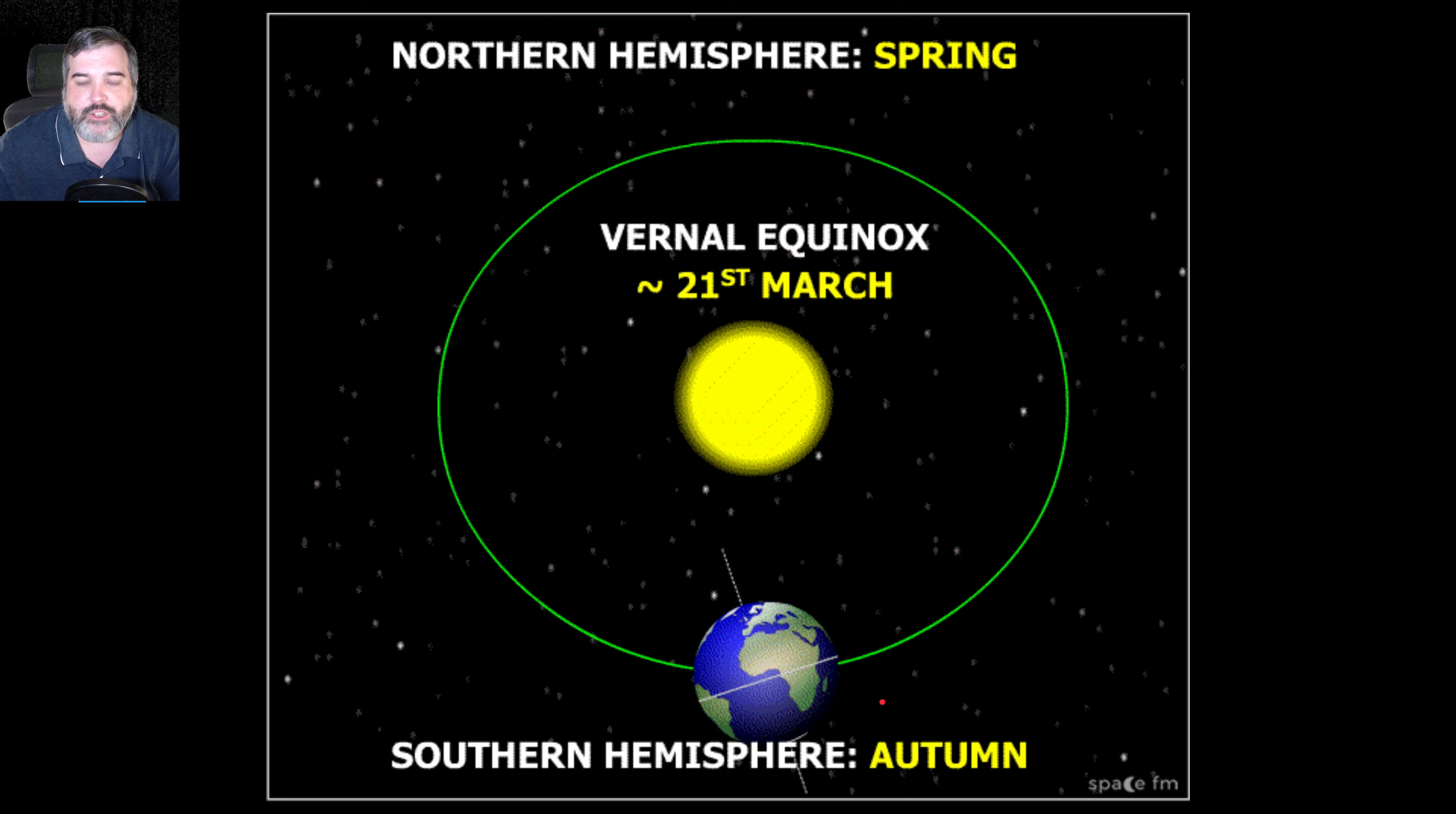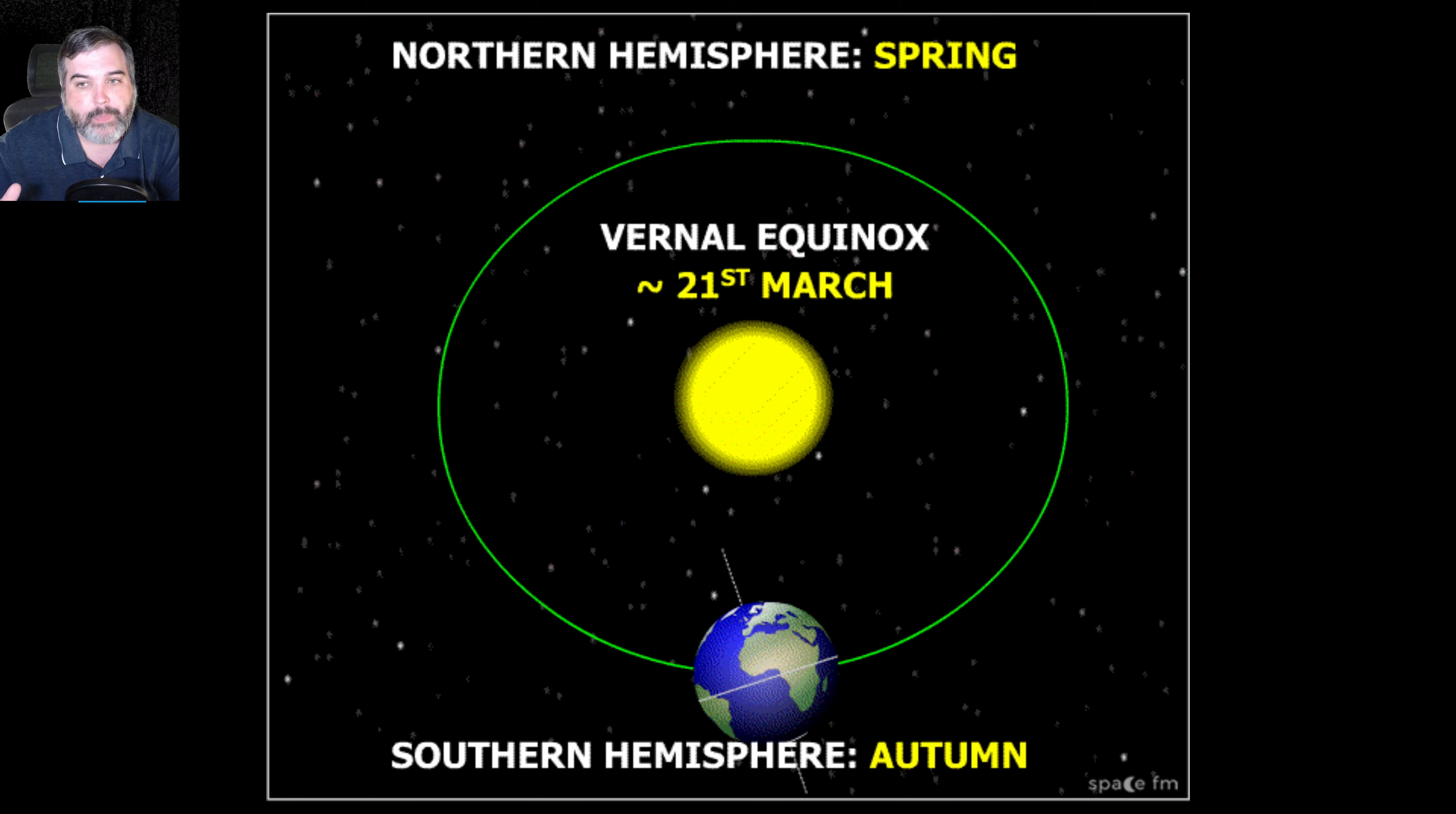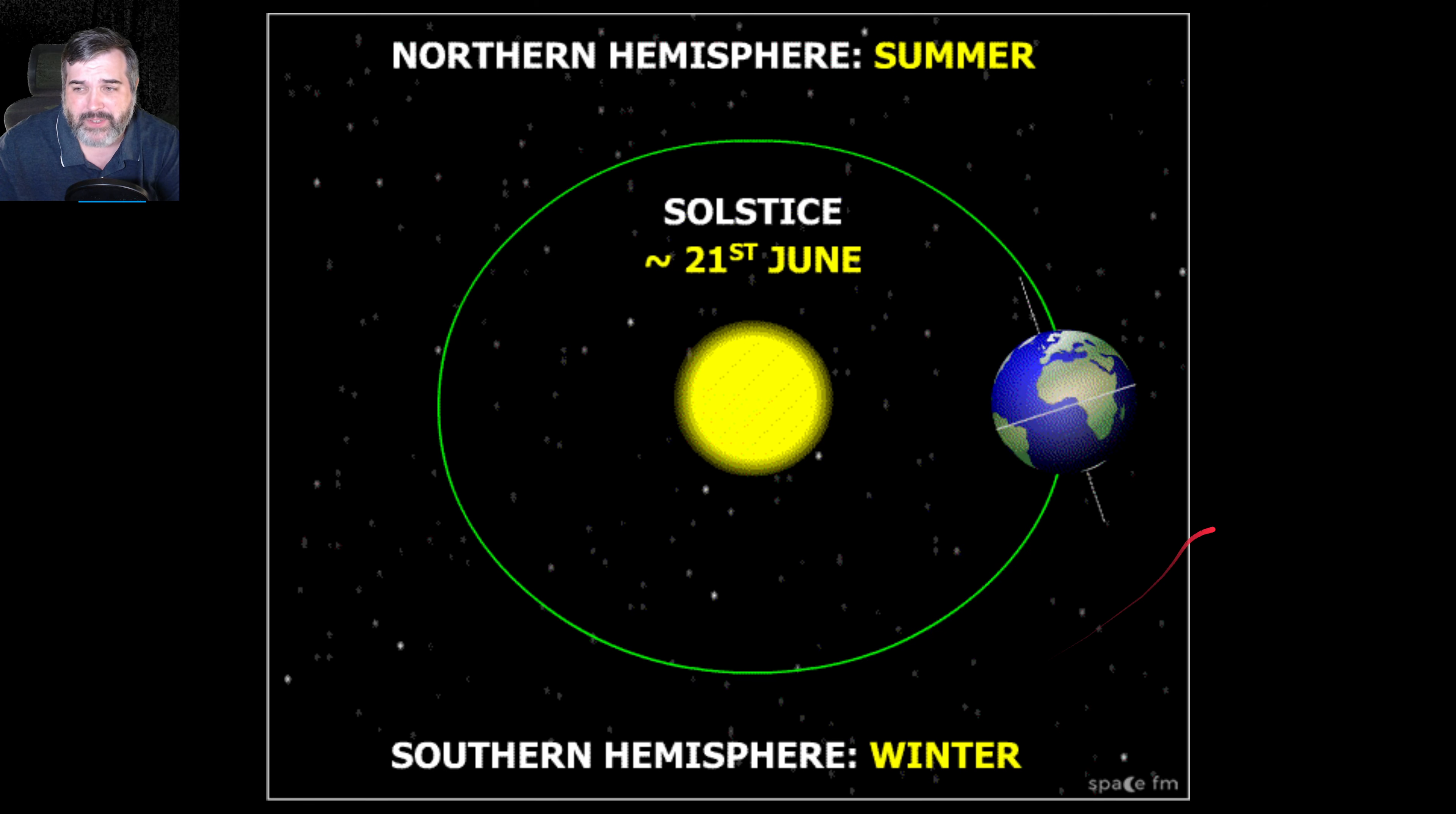So again, just to kind of show this animation, notice that the tilt of the Earth is the same always. It's just where we are relevant. So in the winter, we're farthest away. But then in the summer, we're leaning towards the sun. And again, this kind of represents a circular, but it's not a circle. It's an ellipse. But y'all get the idea. For the purposes of this, it's showing you the angle of the sun and those different months.